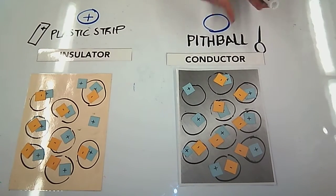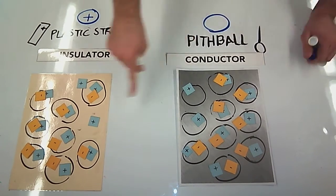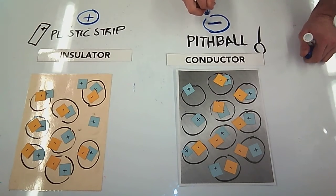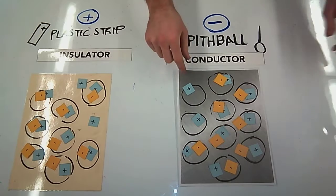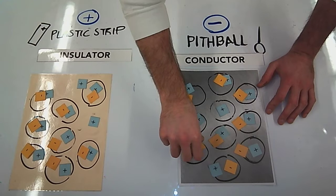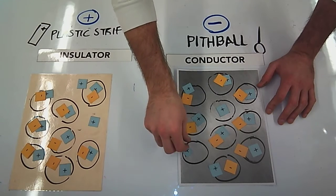And then my pith ball is now missing electrons because they jumped over to the insulating strip. So now my object is negative. Now remember, this is a conductor, so I'm not done with my model just yet. Electrons can move freely through this material, and they're repelled from one another, so they want to spread out as much as possible.